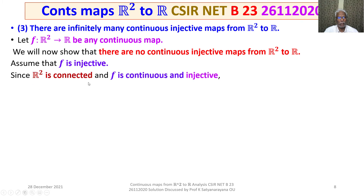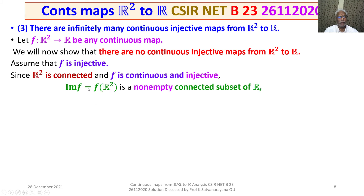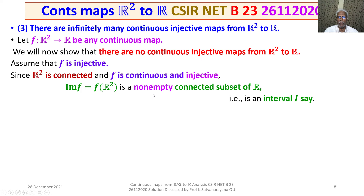Since R square is connected and F is continuous, the image of F, that is F(R square), is a connected subset of R. The connected subsets of R are intervals, so the image is some interval I. Now, since F is also injective, the image is non-empty. Let R₀ be an interior point of the image I.